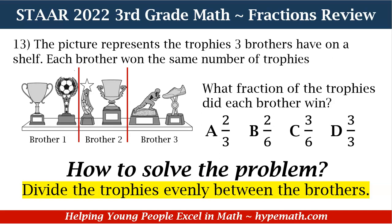If you notice in our example, we've divided the trophies and sectioned them off to show brother one has two trophies, brother two has two trophies, and brother three has two trophies.